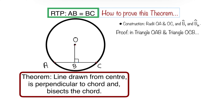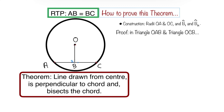We're going to start with the construction — remember, the first thing is to construct. We're going to construct the radii OA and OC. So I'm constructing radius OA and also radius OC. You can see them there. Remember: plural is 'radii,' singular is 'radius.'